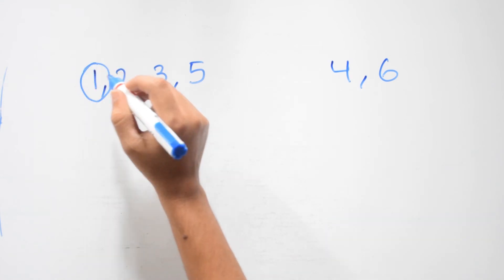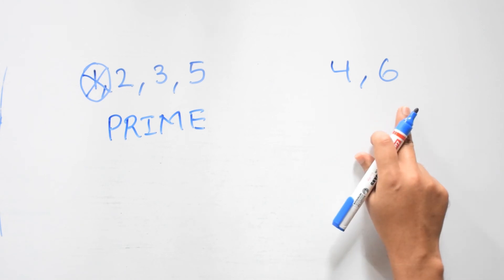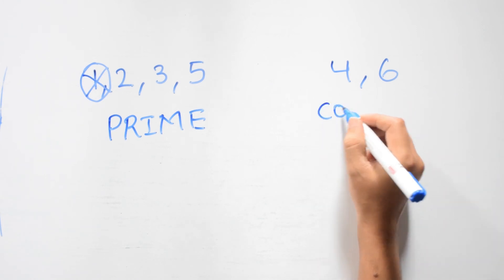One is a special case we'll talk about in the next video. So in these two types of numbers, this type 2, 3, 5 are called prime numbers and 4 and 6 are called composite numbers.